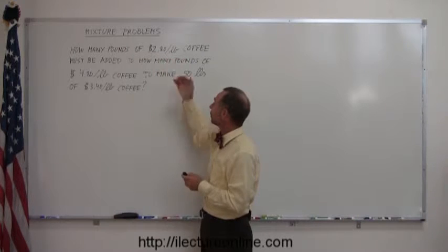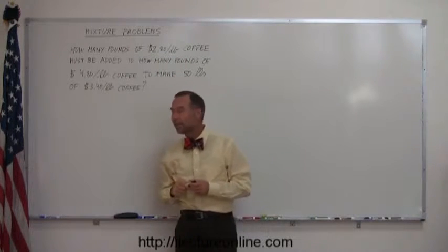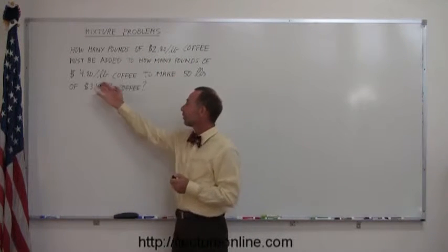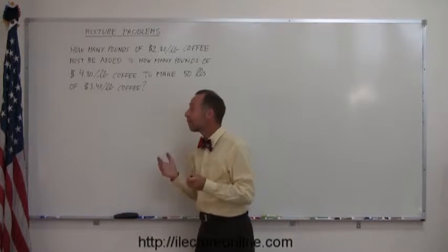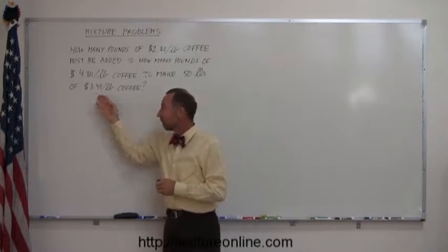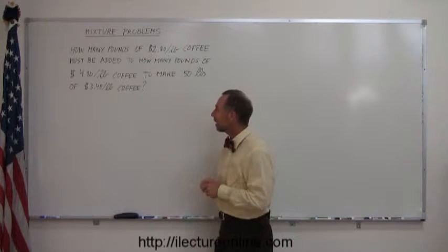One type of coffee that costs $2.80 a pound, another type of coffee that costs $4.80 a pound, and when we mix them together, we should end up with 50 pounds of $3.40 a pound coffee.